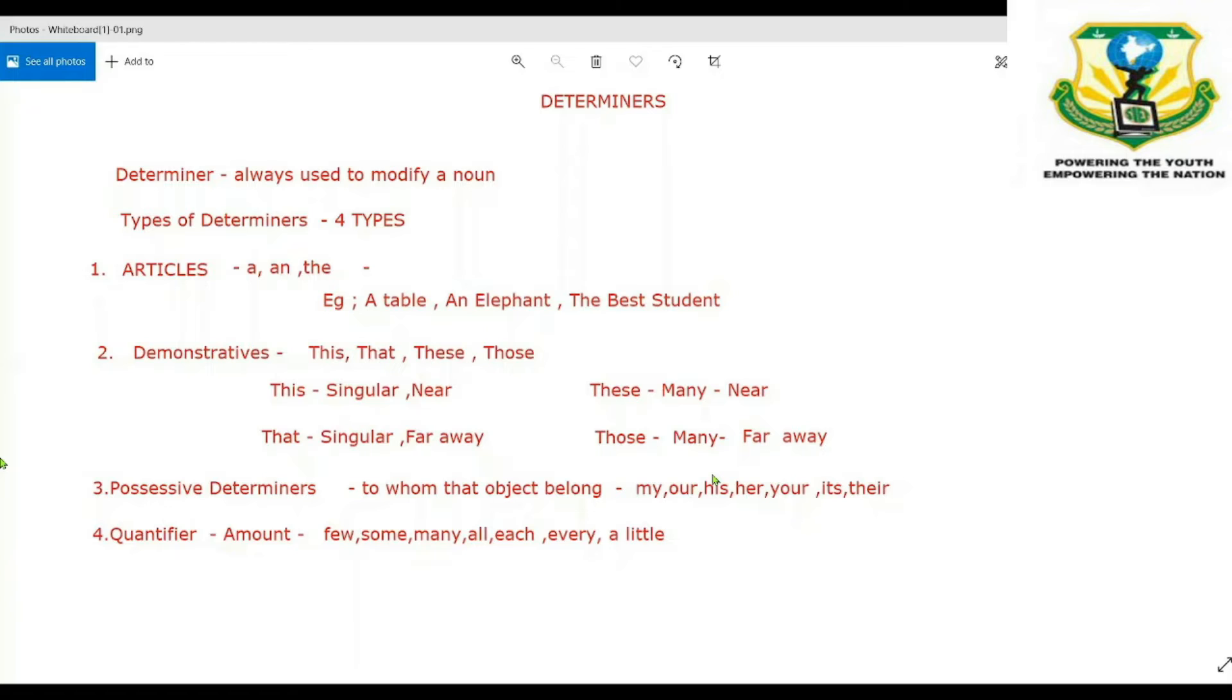And the next is these and those. Both are used for plural objects. For example, I have two phones here which is more than one. These are my phones. When these phones are near to me, I say these are my phones. When they are far away from me, I say those are my phones. These are the demonstratives, the second type of determiners.